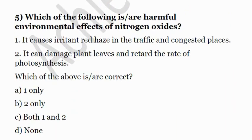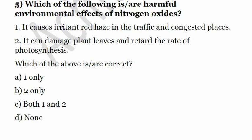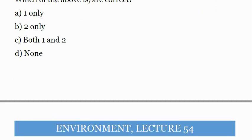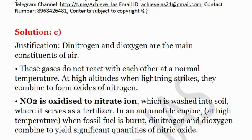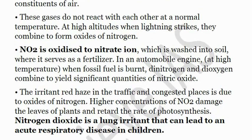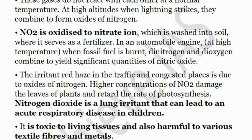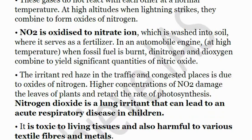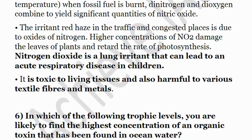Fifth question: Which of the following are harmful effects of nitrogen oxide? First, it causes irritant red haze in traffic in congested places. Second, it can damage plant leaves and retard the rate of photosynthesis. Both statements are correct. High nitrogen oxide concentration causes eye irritation and cataract-like problems. It damages plant leaves and retards photosynthesis because acid rain damages plant leaves. NO2 is also oxidized to nitrate which is washed into soil where it serves as a fertilizer, and it contributes to lung irritation and respiratory diseases in children and elderly. The answer is C, both 1 and 2.